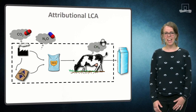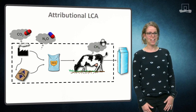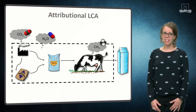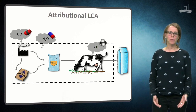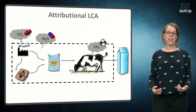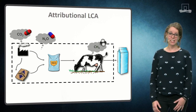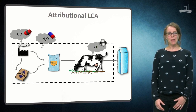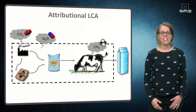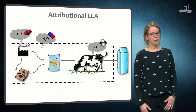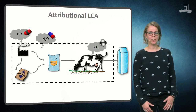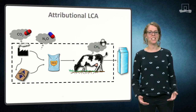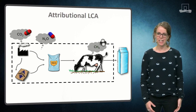In this case, attributional LCA can help you. Attributional LCA describes the environmental impact of a system in a status quo situation. It can be seen as an accounting model to monitor and report the environmental impact of a system at all levels at a static point in time.